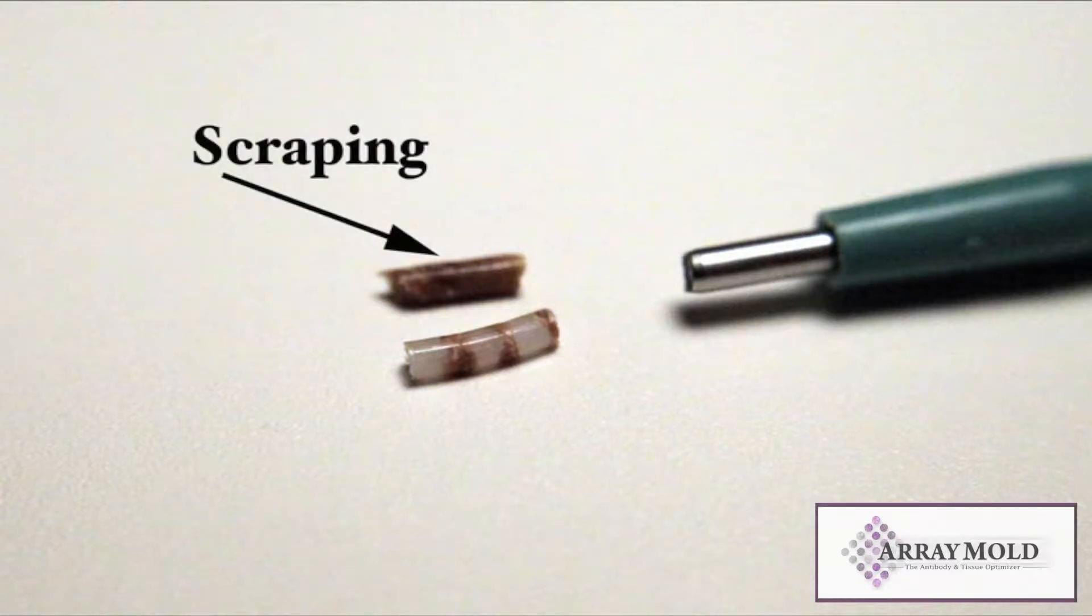This picture shows an example of the scraping technique and punch fill technique. The scraping is a solid tissue core while the punch fill core has scant tissue and paraffin throughout.